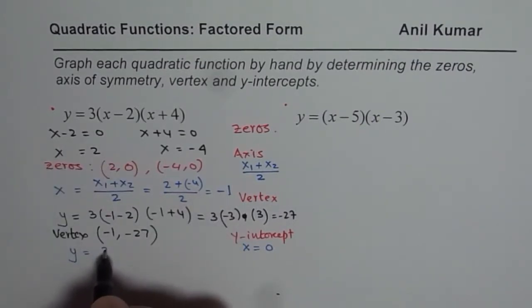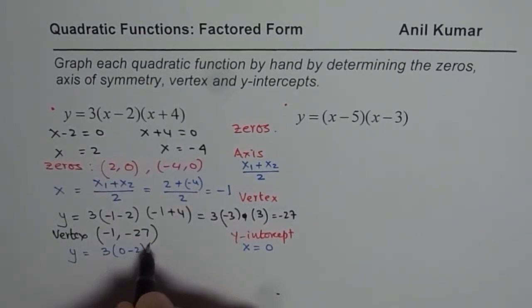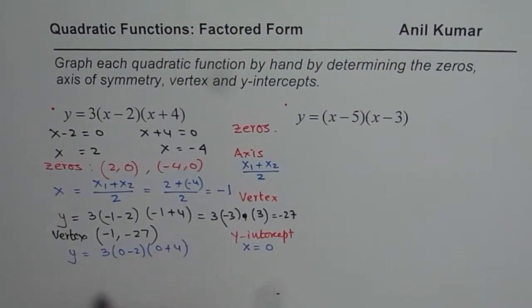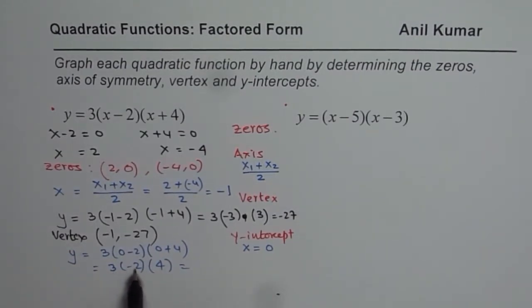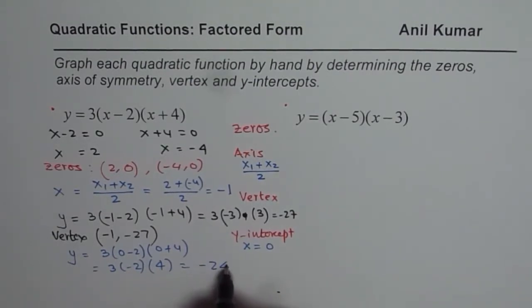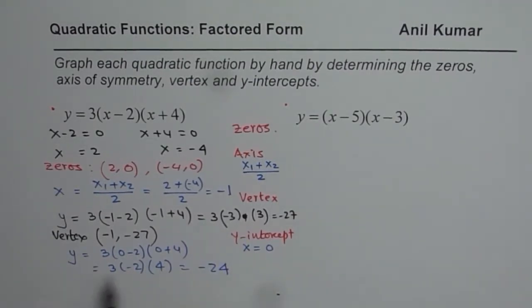Substitute x as 0: 3 times (0 - 2) times (0 + 4). That gives you 3 times minus 2 times 4. 3 times minus 2 is minus 6, and minus 6 times 4 is minus 24. So we get a y-intercept of minus 24. That is how we get all the parameters we need to sketch the graph.